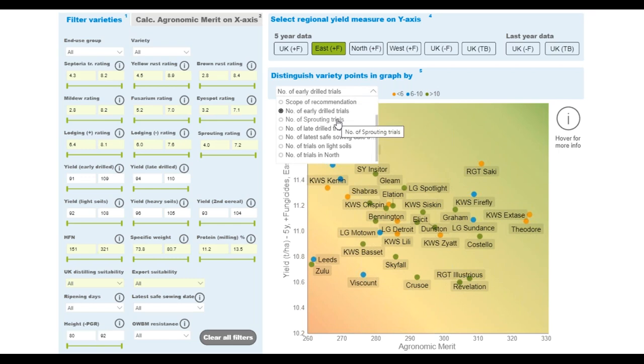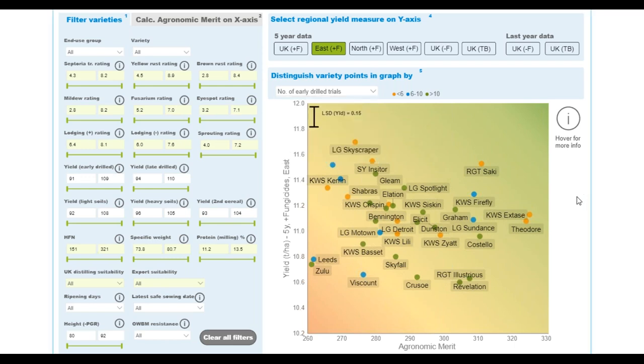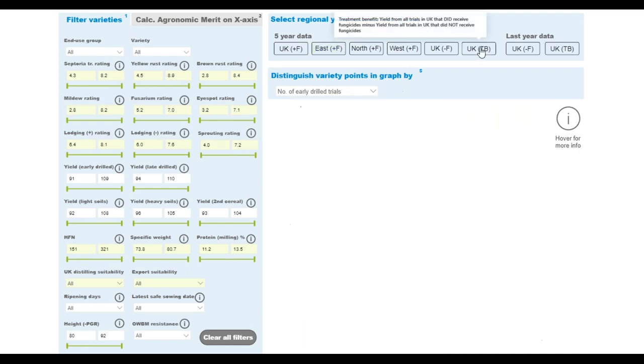Other options exist. If you want to see which varieties are the control varieties, you can see that very clearly. And use group scope of recommendation, et cetera. The reason we've included the number is - those of you who are experienced users of the recommended list booklet will have seen that some of the figures are mentioned in brackets that indicate that there's limited data. I wanted to find a way to make that clear. Where there's limited data, it's usually in these trials - the sprouting trials, the late drill trials, trials on light soils, et cetera.